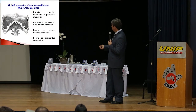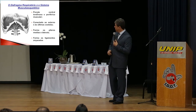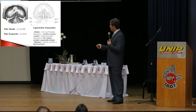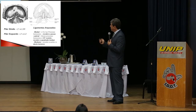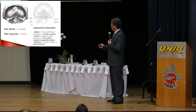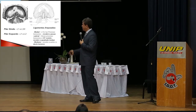O diafragma é composto por uma porção central tendinosa e periférica muscular, conectada ao esterno e às últimas costelas, formando os pilares mediais, laterais e os ligamentos arqueados. Aqui representados os pilares direito e esquerdo: o pilar direito de L1 a L3/L4, o pilar esquerdo de L1 a L2. O complexo dos ligamentos arqueados inclui os ligamentos medial, lateral e mediano. O medial recobre o psoas, o lateral vai do processo transverso até a 12ª costela recobrindo o quadrado lombar, e o mediano recobre a aorta e o ducto torácico.